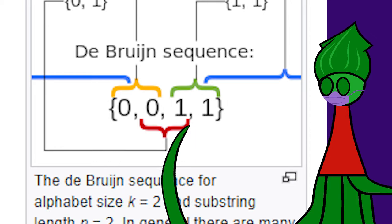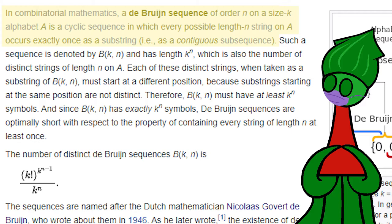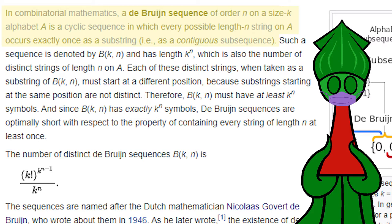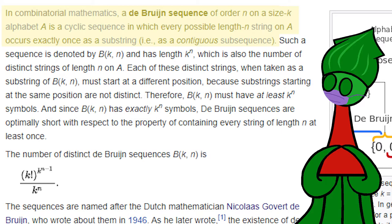Given a natural number k and another natural number n. Natural numbers are simple numbers, integers above zero, like one, two, three, and so on. A Debron sequence of order n on a k-sized alphabet contains every n-length permutation of k elements precisely once.